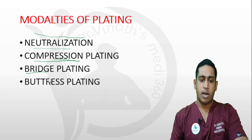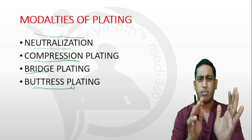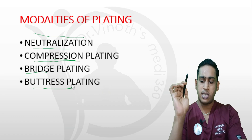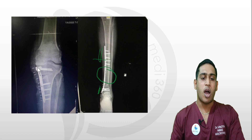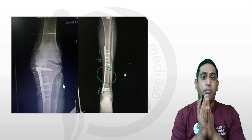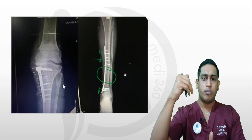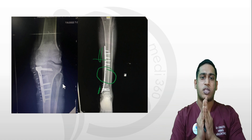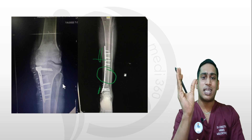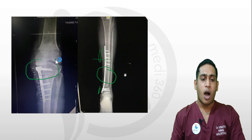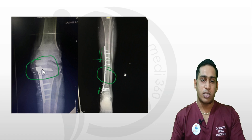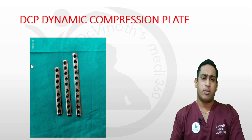The fourth modality is buttress plating. Buttress means support. This type of plate provides support to the articular surface — similar to pillars at the base of a building providing continuous support. These plates provide continuous support and are mainly applied at the articular surface. They are useful for articular fractures and prevent collapse of the articular fragments. This modality is called buttress plating.